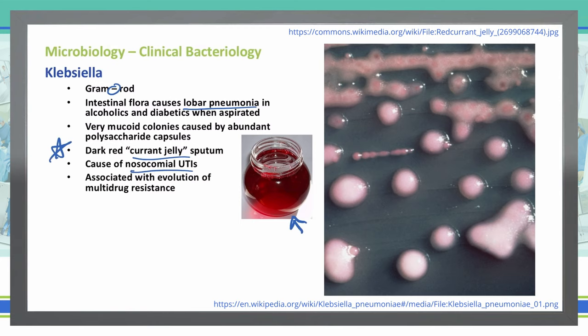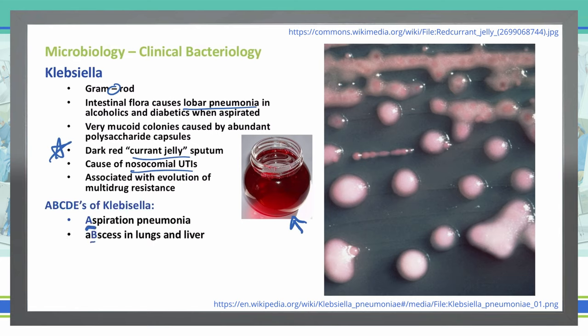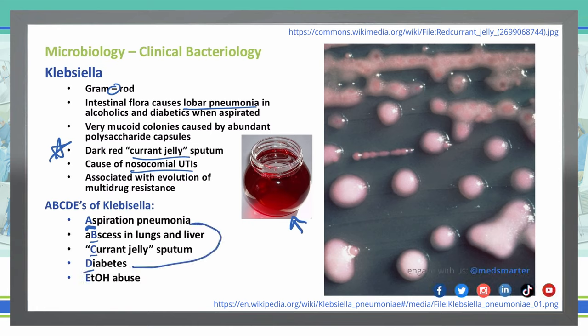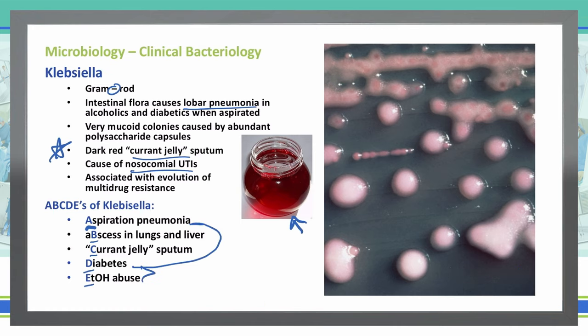Let's talk about the ABCDEs of Klebsiella — a good mnemonic to help you remember. A is aspiration pneumonia. B is abscesses in the lungs and the liver. C is that currant jelly sputum. D — often seen in diabetics, which can be associated with that aspiration pneumonia. And E is ethanol abuse, which we talked about, all going together with the aspiration pneumonia.